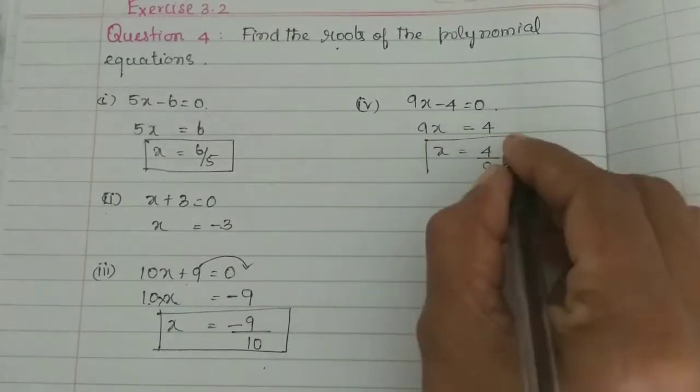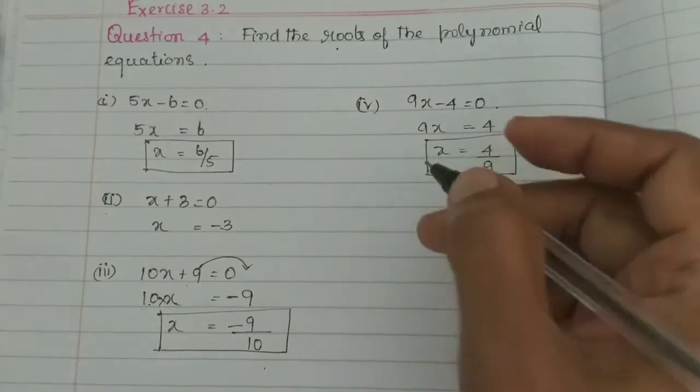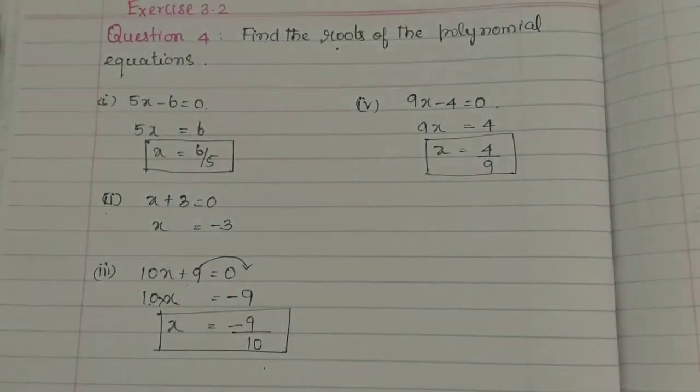Then x is equal to 4 divided by 9. That is all. The value of x is equal to the root of the polynomial.